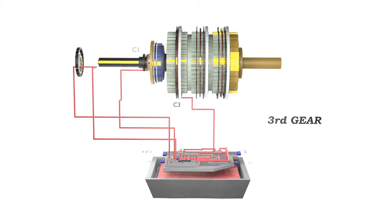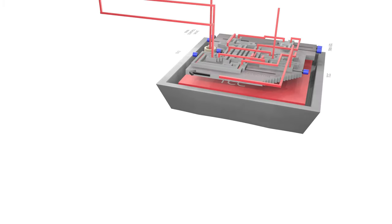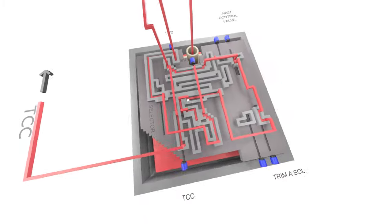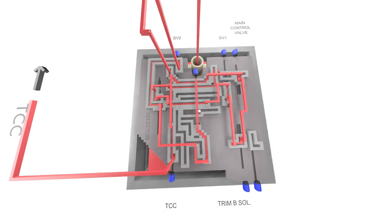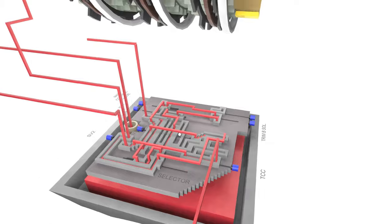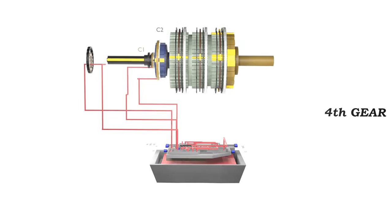For fourth gear we must engage both C1 and C2. C3 will now disengage and exhaust out of trim A solenoid. To engage C2, the main line must pass through three solenoid valves: through trim B solenoid, then shift valve 1, and from there through the selector valve. C1 and C2 are now engaged — fourth gear.